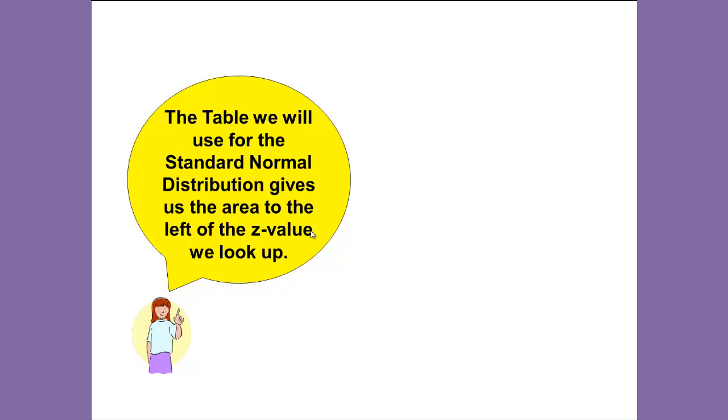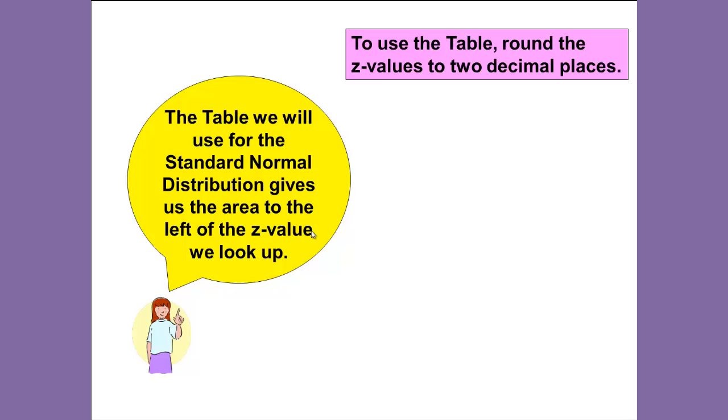The number of decimal places must match our table. The table we use for the standard normal distribution gives us the area to the left of the Z value we look up. To use the table, round the Z values to two decimal places.